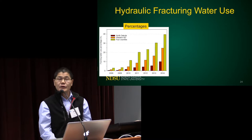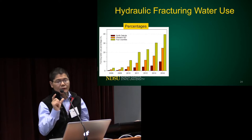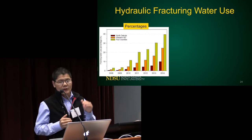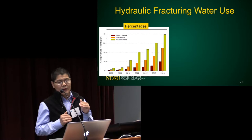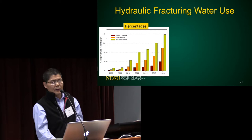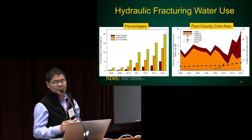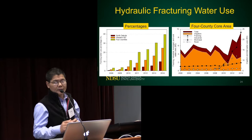How significant is hydraulic fracking water use compared to other water uses in North Dakota? We have three percentages. Hydraulic fracking water use versus total water use for the entire state increased from almost zero to about 10 percent. In western North Dakota — 16 counties with oil production — that percentage increased from less than 1-2 percent to 25 percent. In the four-county core area, that percentage increased from less than 5 percent to 40 percent — that's significant.